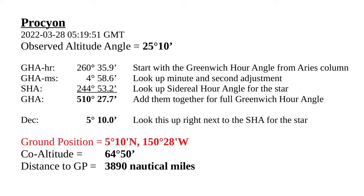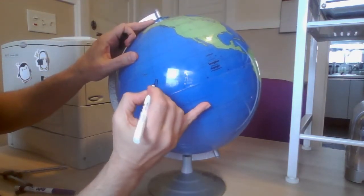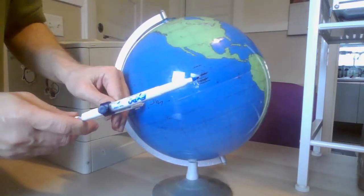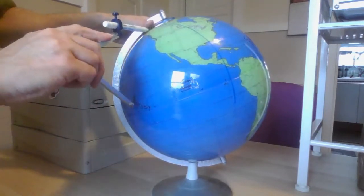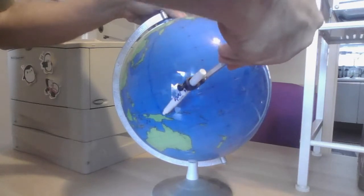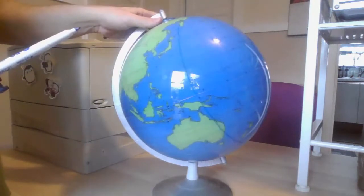Now we need to find the actual GP — the ground position — which I've already calculated. The ground position for Procyon is at about 5 degrees 10 minutes north and 150 degrees 27 minutes west. Centering our drafting compass on the GP for Procyon, we will draw in our circle of equal altitude. And there we have our circle of equal altitude for Procyon.